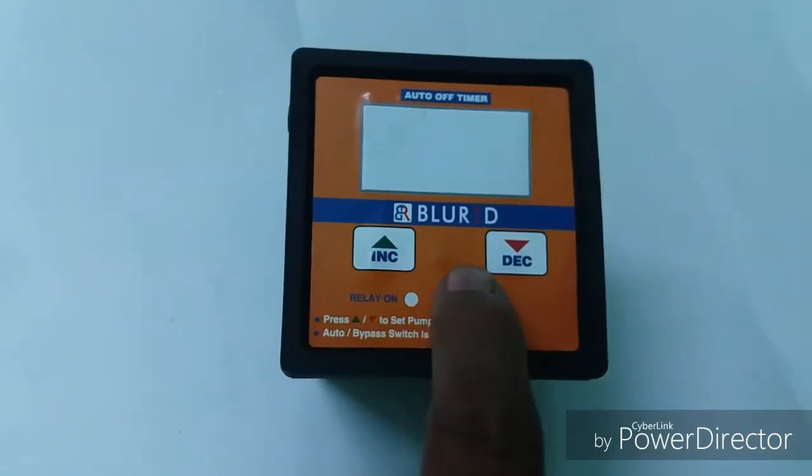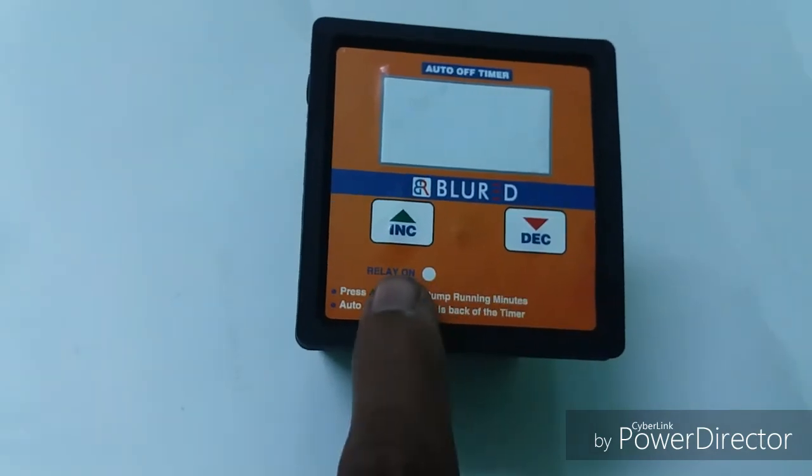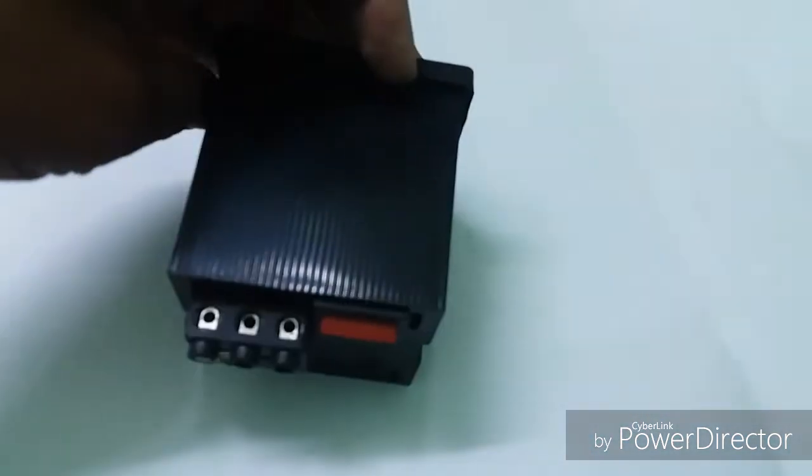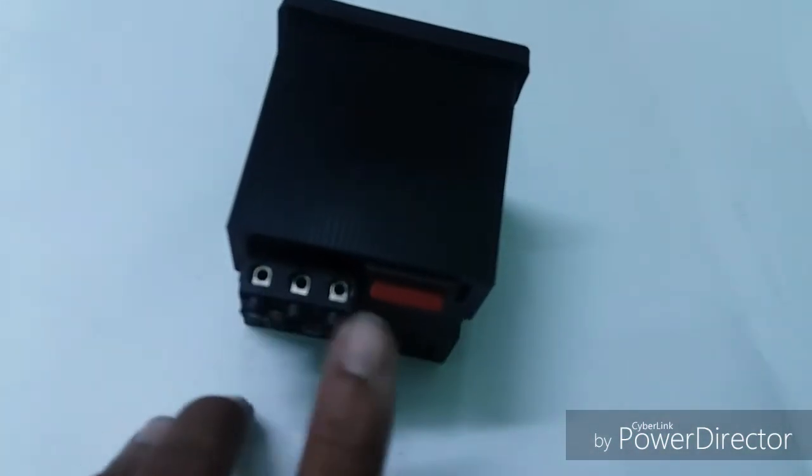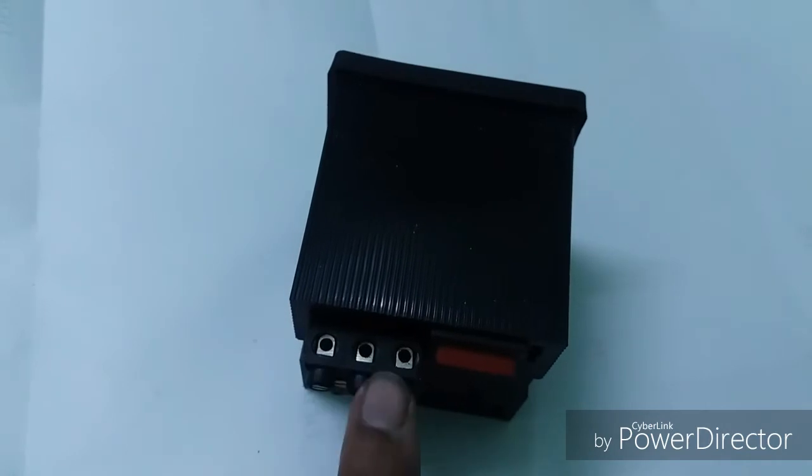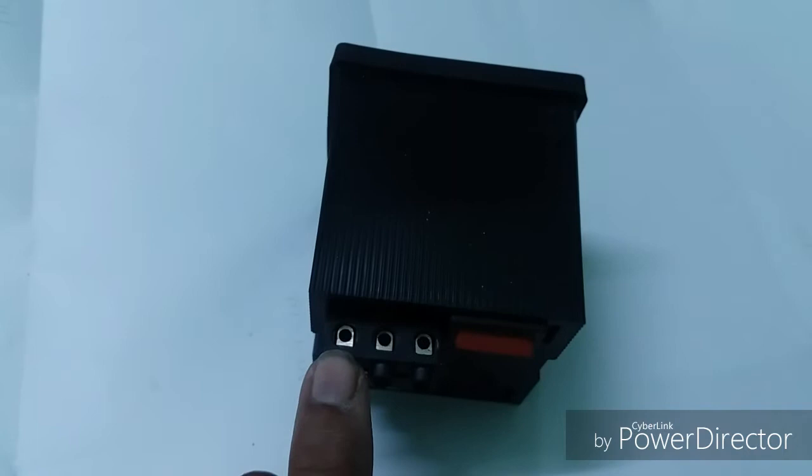This is the relay-on LED. When you press the start button, there is a start button here. By pressing the start button, the output supply is coming out. This timer has an incoming phase supply and an outgoing phase supply. This is the neutral.